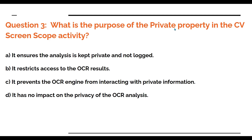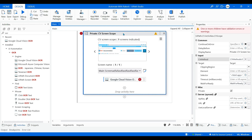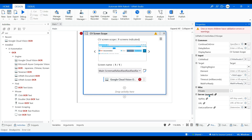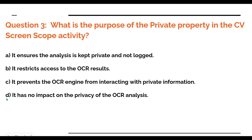Now let's see the third question. What is the purpose of the private property in the computer vision screen scope activity? What is the use of this private property — if you check it, what would happen? If you uncheck it, what would happen? The options are: it ensures that the analysis is kept private and not logged; it restricts access to the OCR results; it prevents the OCR engine from interacting with private information; or it has no impact on the privacy of the OCR. Comment your answer in the comment section.